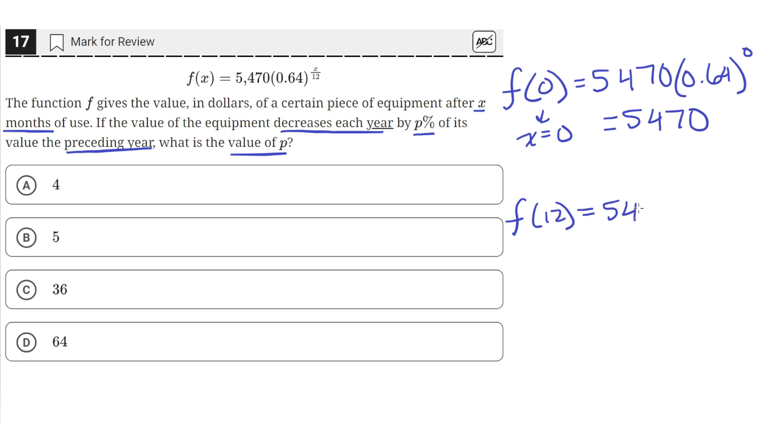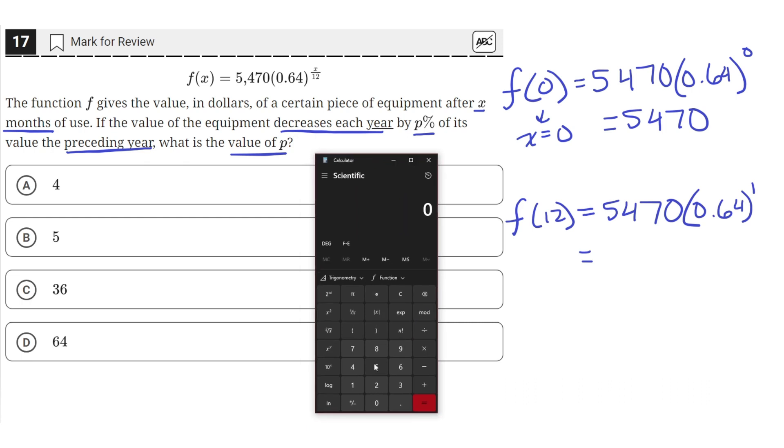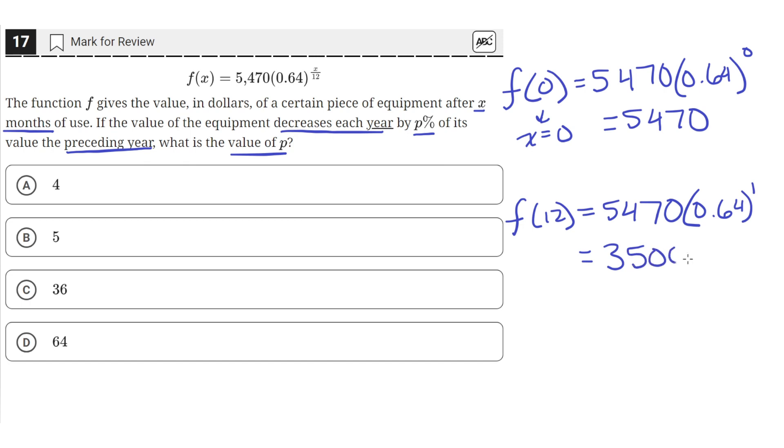So we'll have 5,470 times 0.64 raised to the first power, because 12 divided by 12 is just 1. So this will just be equal to 5,470 times 0.64. And we can do that in our calculator. 5,470 times 0.64. So we'll get 3,500.8.